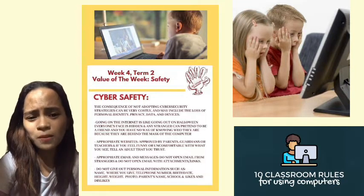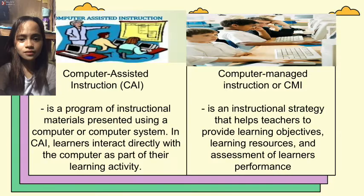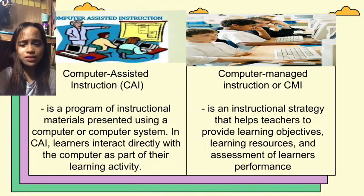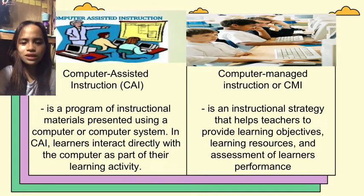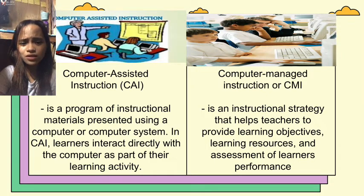There are two major applications of computers in instruction: computer-assisted instruction (CAI) and computer-managed instruction (CMI). CAI is a program of instructional materials presented using a computer or computer system. In CAI, learners interact directly with the computer as part of their learning activity. Activities include drill and practice, tutorials, simulation, supplementary exercises, and writing using word processors. These computer activities may be presented in materials that learners can control by themselves, or they can reinforce materials introduced and taught by teachers.